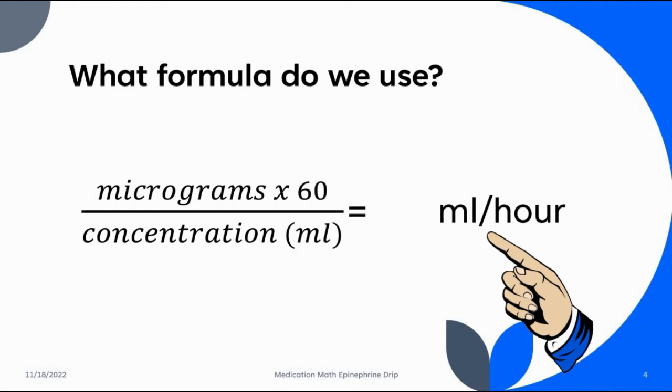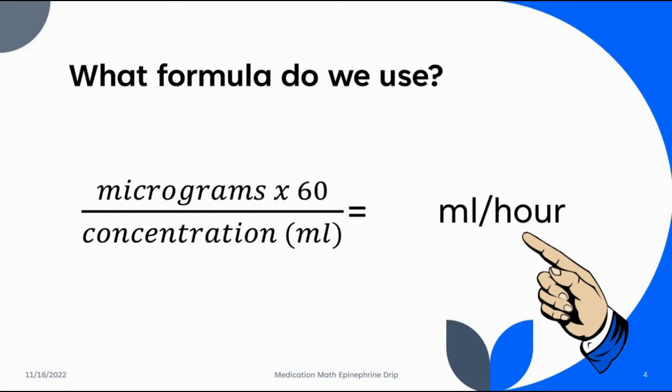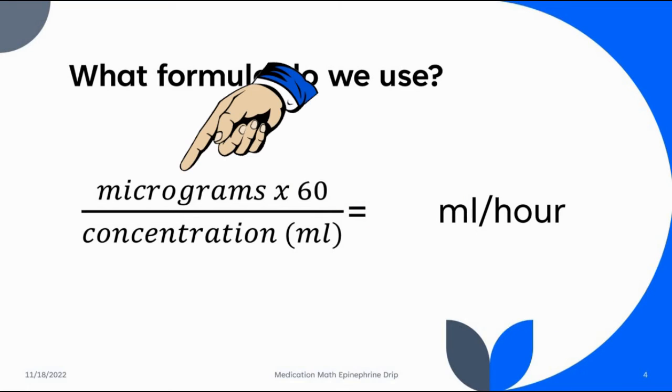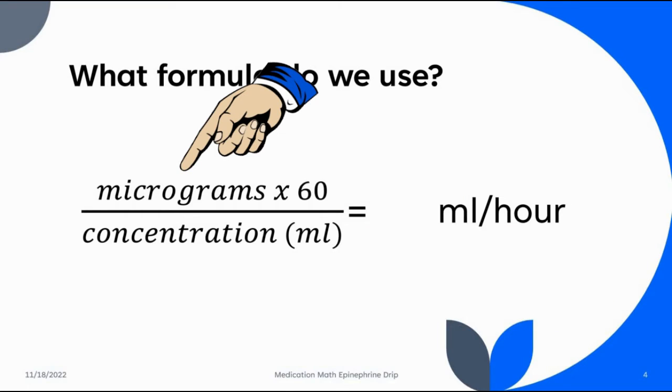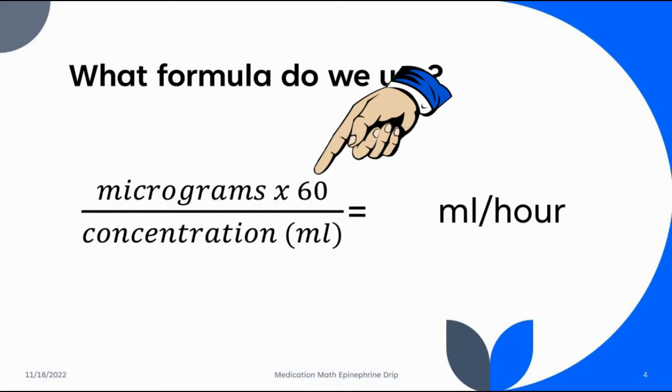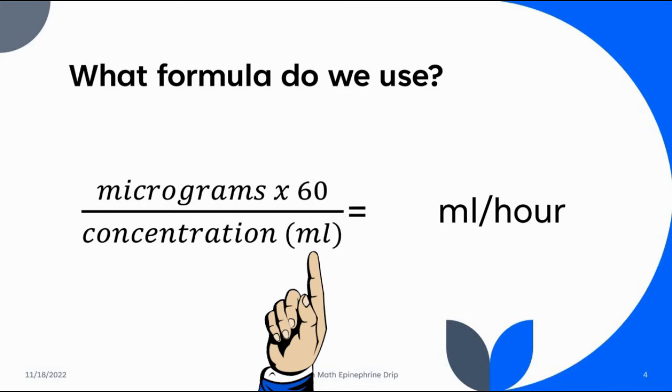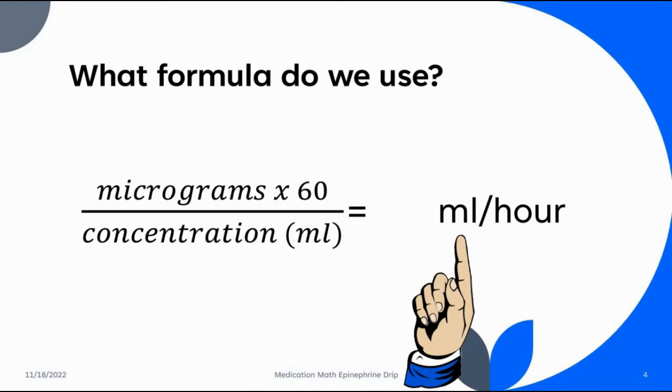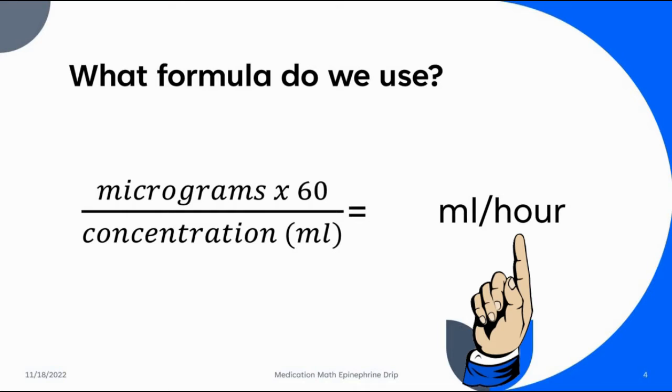So we have to convert minutes into hours. Micrograms per minute, but we're going to have to multiply by 60 in order to convert it to hours. And the bottom of the formula here is concentration. I put milliliters there because we have to end up at milliliters per hour, so we might as well do our math to get a concentration in milliliters.